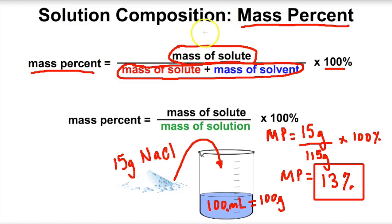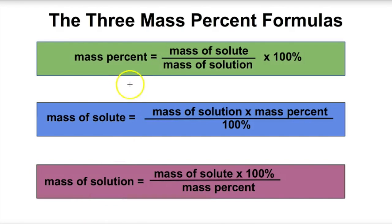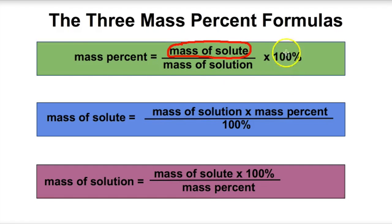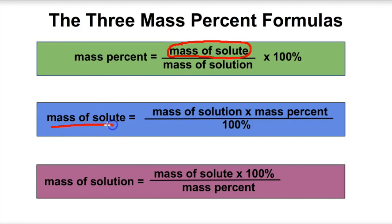Let's work a few more examples applying the mass percent formula. The main formula is: mass percent equals mass of solute over mass of solution, times 100. We can also manipulate this formula to solve for mass of solute: mass of solute equals mass of solution times mass percent, divided by 100%.